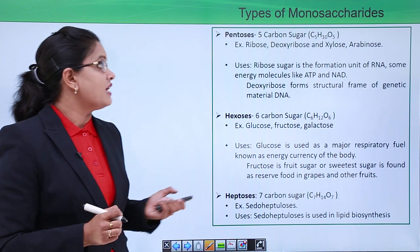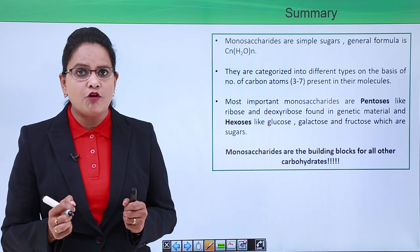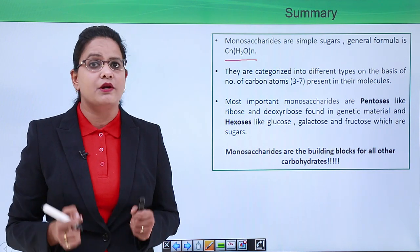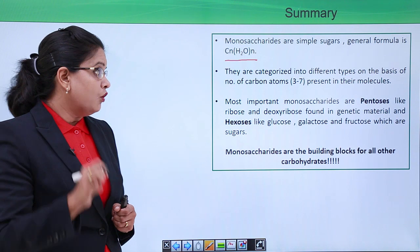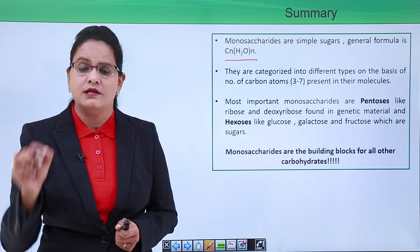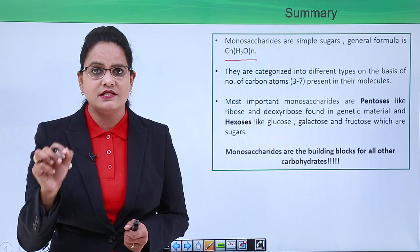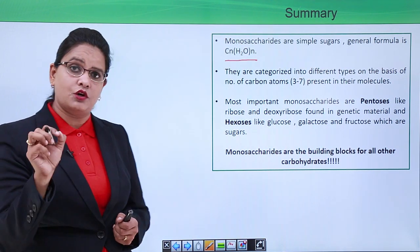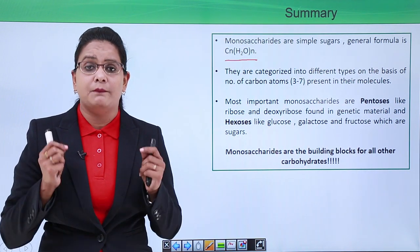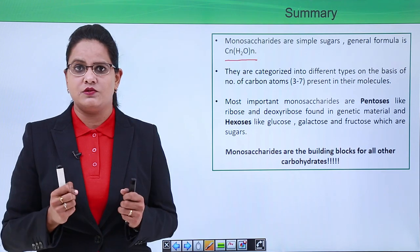To summarize, monosaccharides are the simplest sugars with the general formula CnH2nOn. They can be categorized on the basis of the number of carbon atoms. The most important monosaccharides are ribose, deoxyribose, glucose, and fructose — fructose being a fruit sugar present in different types of fruits. Monosaccharides are the building blocks for all carbohydrates, which will be explored further in later videos. Thank you.